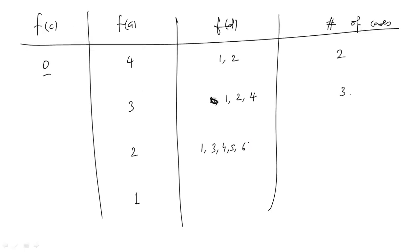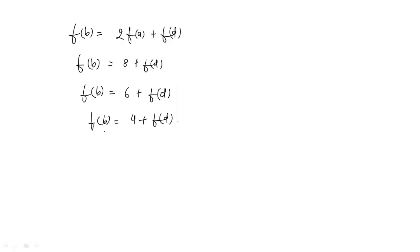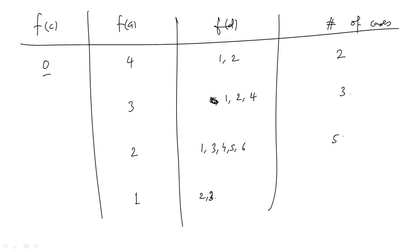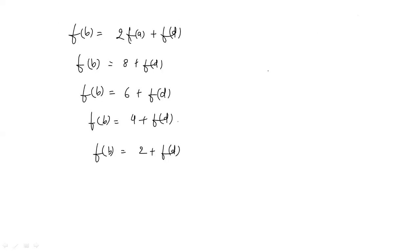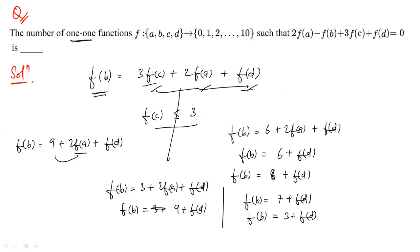Continuing case f(c) = 0: When f(a) = 1: f(b) = 2 + f(d), and f(d) can be 2, 3, 4, 5, 6, 7, or 8 (0 and 1 are taken) — seven cases. Summing all cases: 1 + 4 + 10 + 2 + 3 + 5 + 7 = 31. Wait — totalling step by step: 1, then +4 = 5... the speaker adds to get 17, then 21, 23, 25, 31. The final answer is 31 possible one-to-one functions.